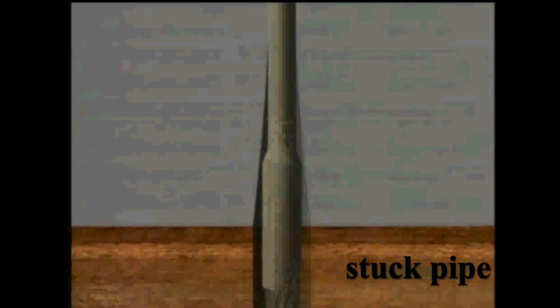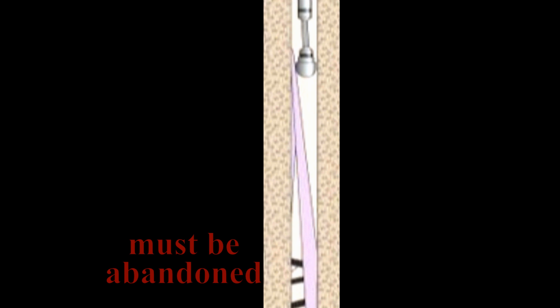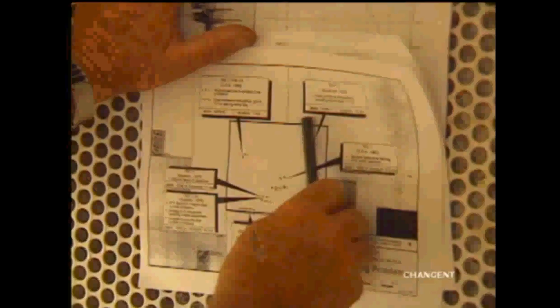Pipe that gets stuck in the hole is called stuck pipe and is a constant concern. When this common problem occurs, it is usually quite simple to resolve so that the drilling program can resume. However, in extreme cases where efforts to unstick the pipe are unsuccessful, the portion of the hole with the stuck pipe must be abandoned, adding cost to an already extremely expensive operation. Therefore, the driller tries various procedures to free stuck pipe.